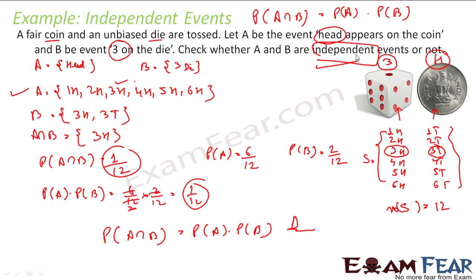Logically also, without even solving the question, we can say they are independent events because we are throwing a coin and a die, and we are asking for an event where you get some number on the die and a head on the coin. Both are independent — they don't depend on each other logically or mathematically.